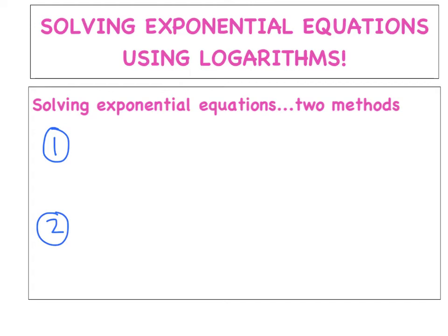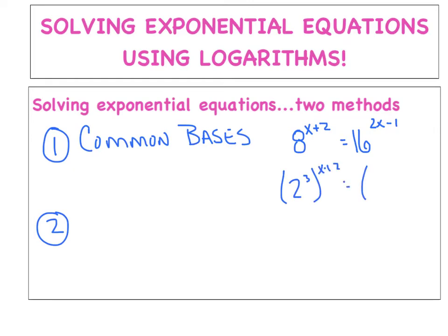The one you did already was called the method of common basis. Do you remember having like 8 to the x plus 2 equals 16 raised to the 2x minus 1 power? You rewrote the 8 as 2 cubed and the 16 as 2 to the 4th so you were able to get the same base on both sides. Now today's method is going to be a logarithmic approach to solving an exponential, and it's going to be more versatile.